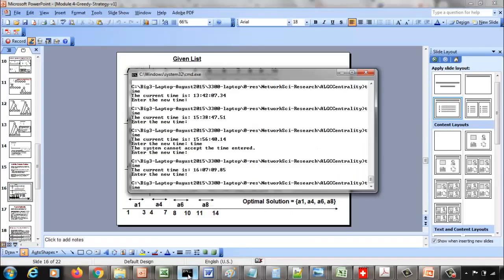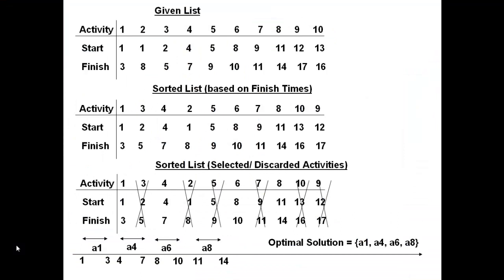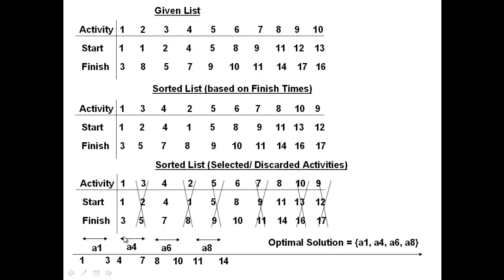Is it the only combination we can pick up? Probably not - you could try some other combination of activities that would also give four non-overlapping activities. But by applying the strategy of picking activities with the earliest finish time, this is what we end up with. As a theorem we want to prove: at least one maximal non-overlapping schedule of activities will include the activity that finishes first. Our strategy naturally leads us to pick the activity that finishes first - in this case we picked activity one.